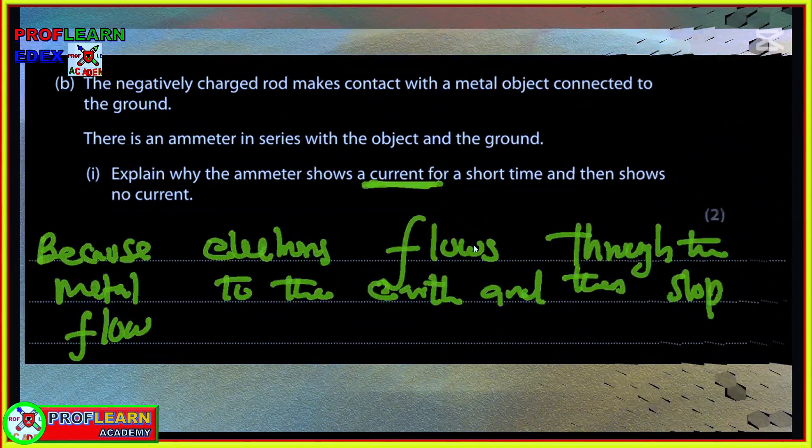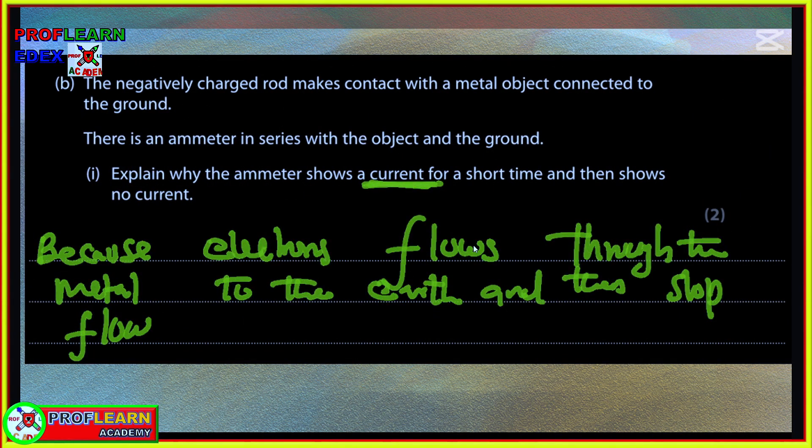Part B: the negatively charged rod makes contact with the metal object connected to the ground. There is an ammeter in series with the object. Explain why the ammeter shows a current for a short period of time. Remember when there is an earth, electrons will flow to the ground. Because electrons flow through the metal to the earth, then the current will stop. There will be no reading when electrons have stopped flowing.